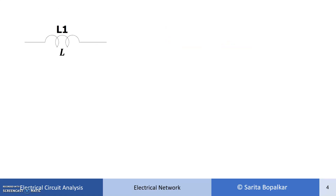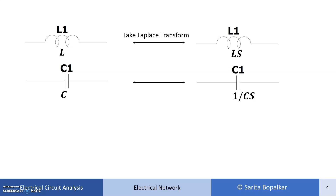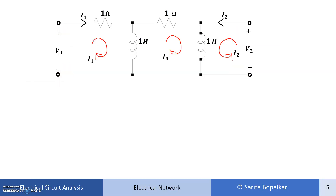Now let's take the transform of our network. For an inductor, replace it with LS where L is the inductor value — for example, a 2H inductor becomes 2S in the transform domain. Similarly, a capacitor of value C is replaced by 1/(CS) in the transform domain.